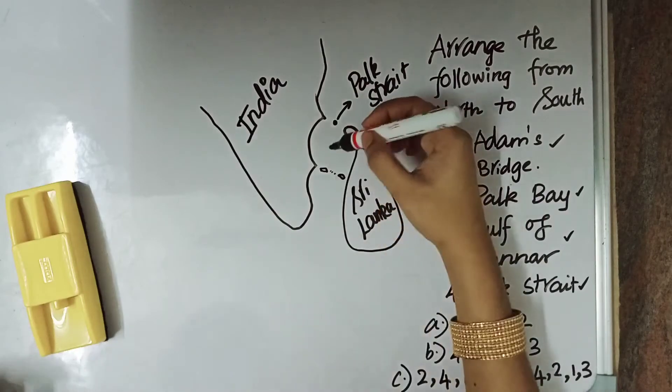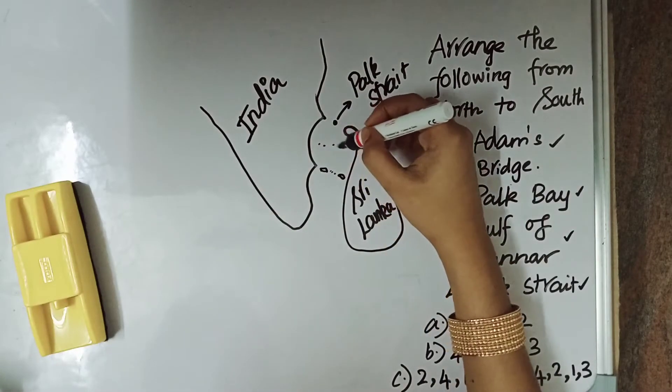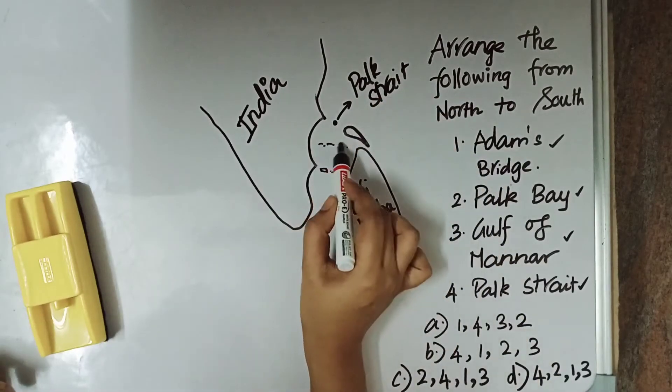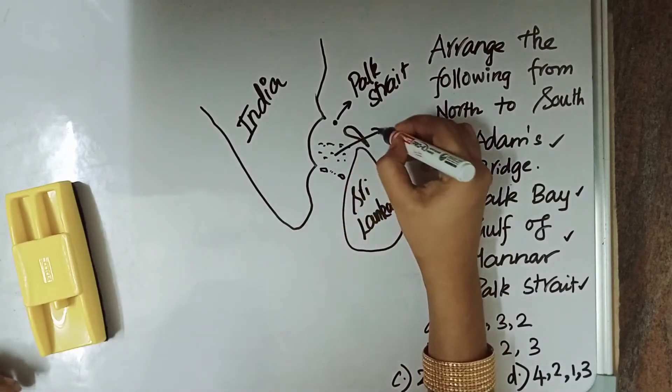Then after Park Strait, here this water body. This water body is called Park Bay.